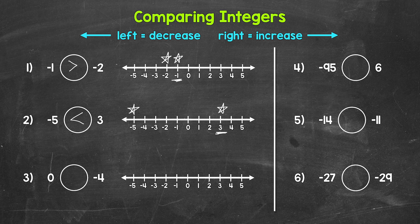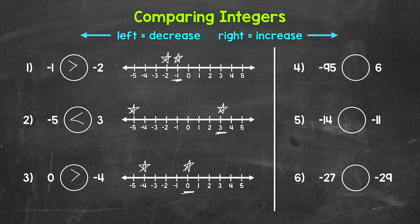Moving on to number three, we have zero is greater than, less than, or equal to negative four. Let's take a look at the number line. Zero is right here and negative four is right here. Zero is further to the right on the number line, therefore it's greater than negative four. Reading this from left to right, zero is greater than negative four. Whenever we have zero and a negative, zero is always going to be greater than a negative.